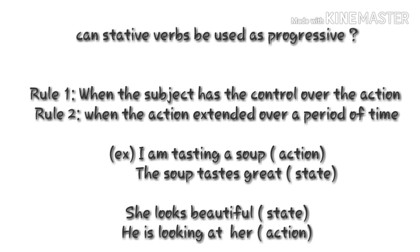Here are two rules. Rule number one: when the subject has control over the action, we can use the continuous form. For example, 'I am tasting a soup.' Here the verb 'taste' is actually a stative verb, but I have used the -ing form because the subject 'I' has control over the verb. Even though 'taste' is a stative verb, it is used in continuous form because here it refers to an action.